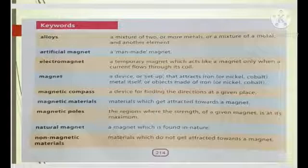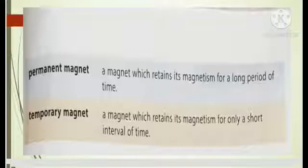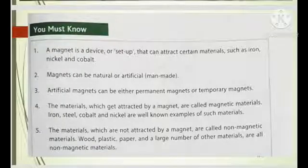Now natural magnet. A magnet which is found in nature, and lodestone is the example. What are non-magnetic materials? The materials which do not get attracted towards the magnet. And permanent magnets, a magnet which retains its magnetism for a long period of time. And temporary is just opposite, a magnet which retains its magnetism for a shorter duration of time. That are temporary magnets.